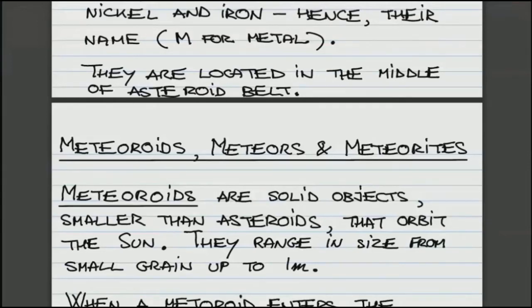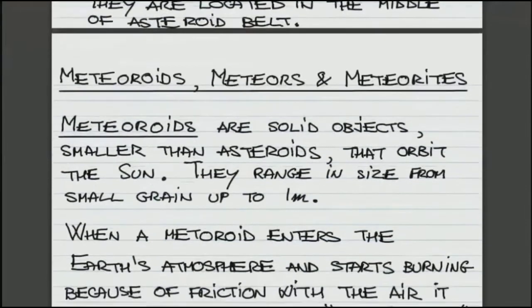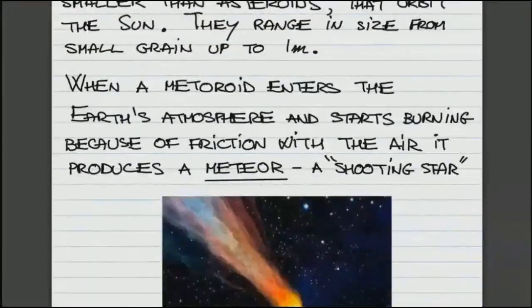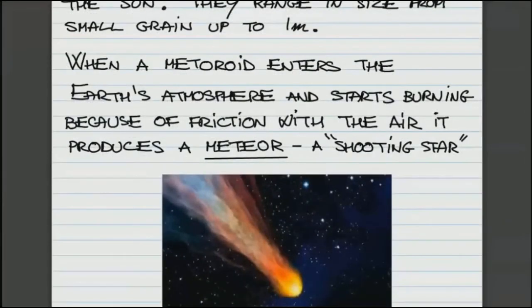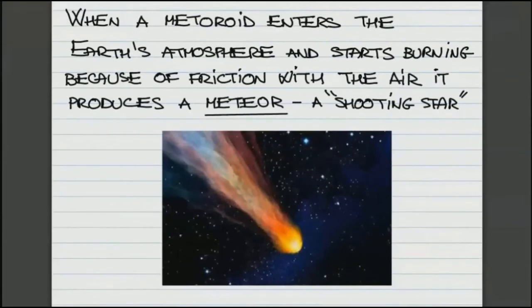They start to burn. When they start burning, they produce what we call a meteor or a shooting star. Here is one spectacular photograph of this burning meteoroid that is producing a meteor.